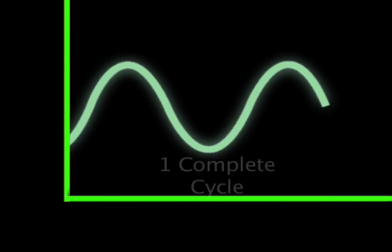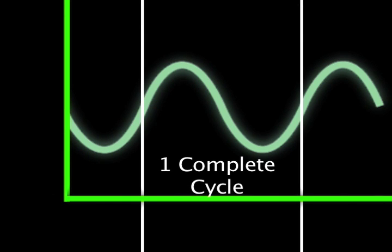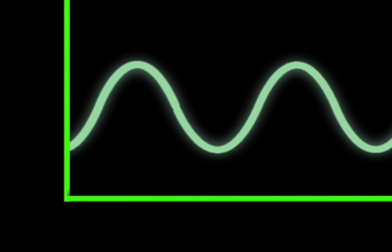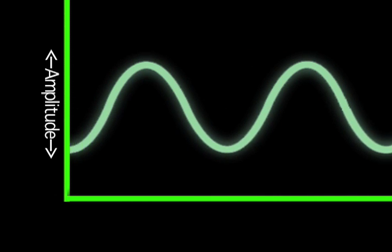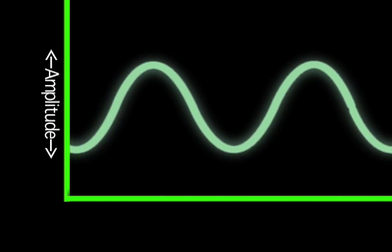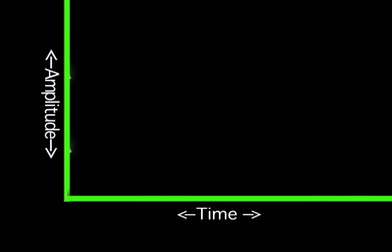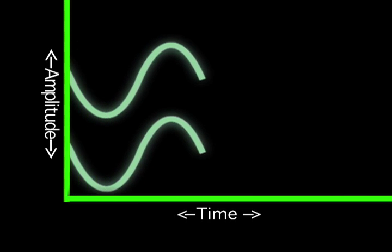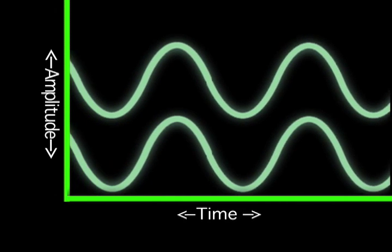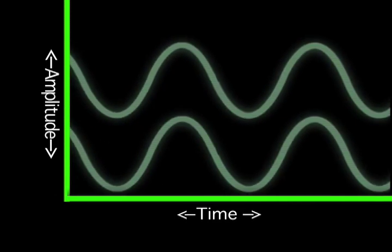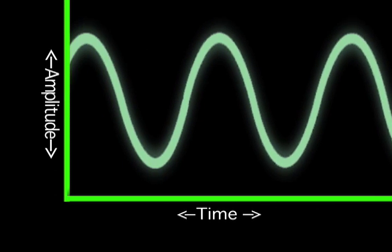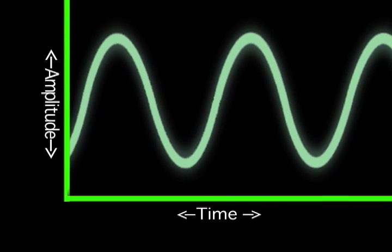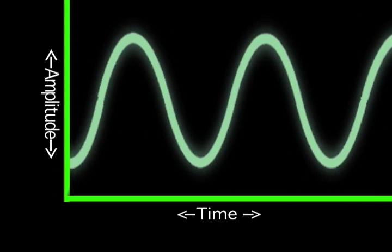If we could see sound, it would look like this. This is one complete cycle of sound — we call this a sine wave. Here we have the amplitude, or volume, and this represents time. Now these two sine waves are in phase with each other, and when these two sine waves meet, the result is this new wave. It has twice the amplitude, or volume, of the two waves by themselves.